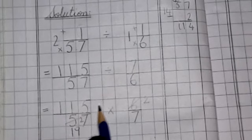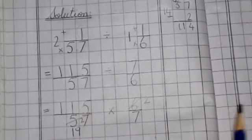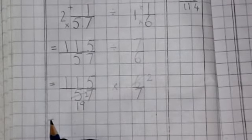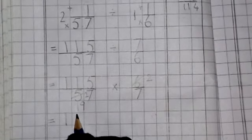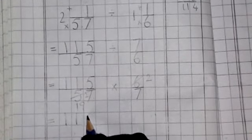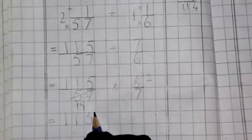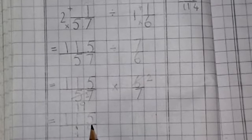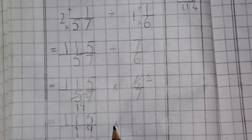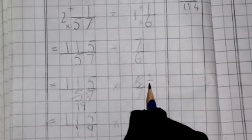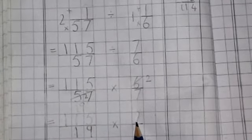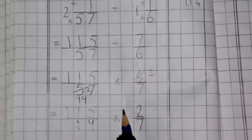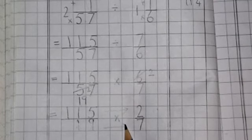Come to the next step. Our next step, which is remaining, we will write. Here we have 115 times 2. Here we have 19 times 7. Now we have 115 times 2 in numerator and 19 times 7 in denominator. We will calculate the answer. Here we go.